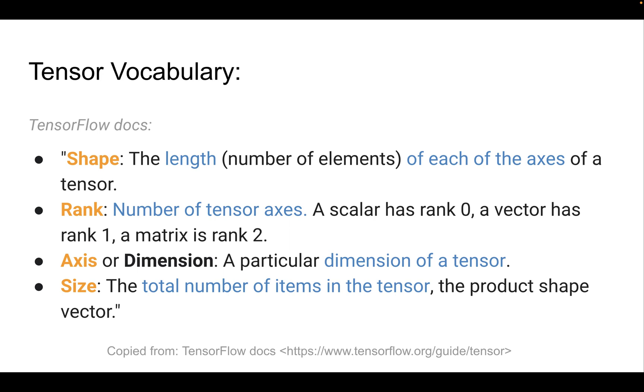Now just for vocabulary, the shape, rank and axis of a tensor are as follows. The shape is just the length of the number of elements along each axis. Rank is the number of axis and axis is the dimension. And the size is just the total number of items in a tensor or a matrix.